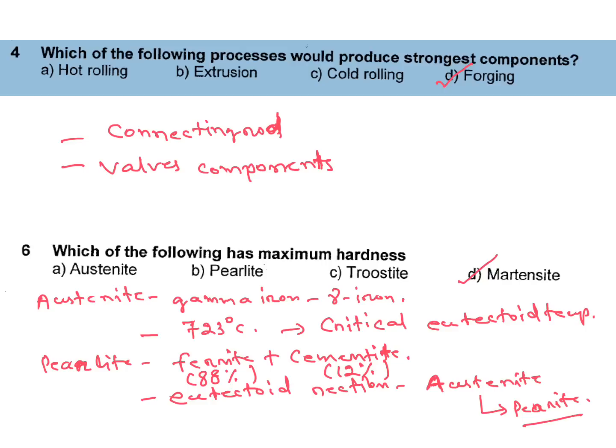Troostite: if we reheat martensite to about 400 degrees Celsius, then we will get troostite. Martensite: if we suddenly quench or cool the austenite, we will get martensite. Medium may be water, oil or salt bath. We will get martensite from austenite by sudden cooling.